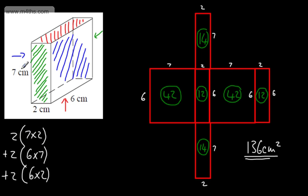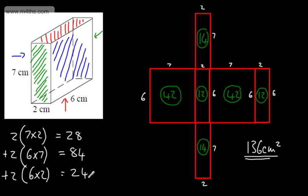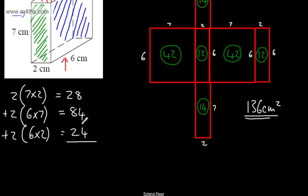So all I'm going to do is two lots of seven multiplied by two, add to that two lots of six times by seven — the seven by two is the green one, the six by seven is the blue one — and then finally add two lots of six multiplied by two, and that's the red one. That gives me 14; two times 14 is 28. Six times seven is 42; doubled is 84. Six times two is 12; times two is 24. Adding all of those up gives us exactly the same answer of 136 centimetres squared.